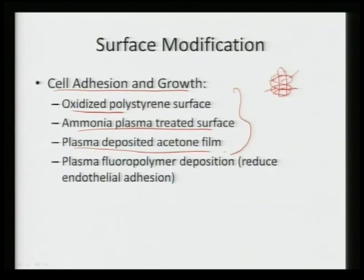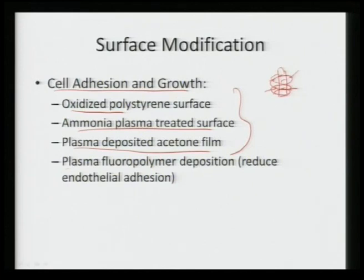But in certain cases, when we want to reduce overall cell interaction with the device — for example, when we want to act as a sensor to analyze chemical composition of nearby blood or pH value — we want that surface to remain exposed for a certain duration. In those cases, we want to reduce cell adhesion on those surfaces and can utilize plasma fluoropolymer deposition.